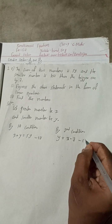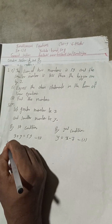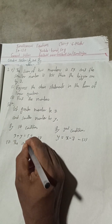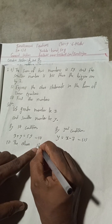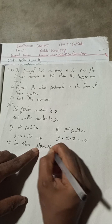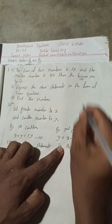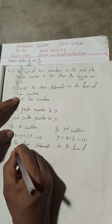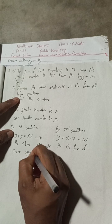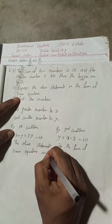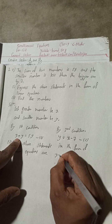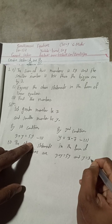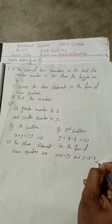Therefore, the above statements in the form of linear equations are: x plus y equals 59, and y equals x minus 7. These two are the equations in linear form.